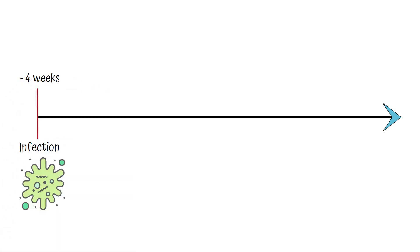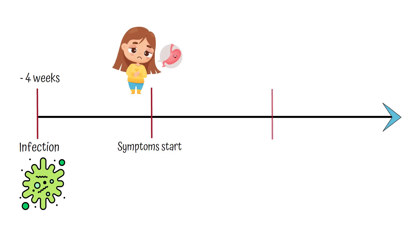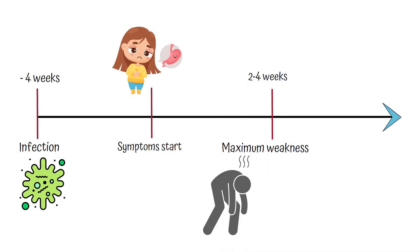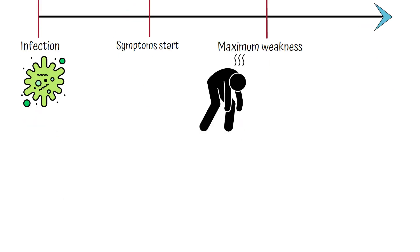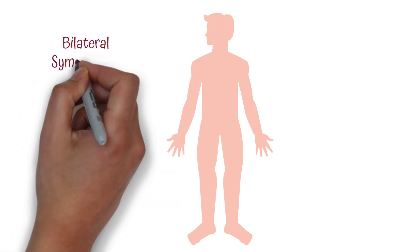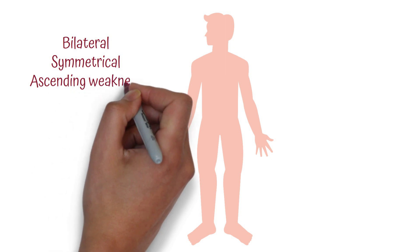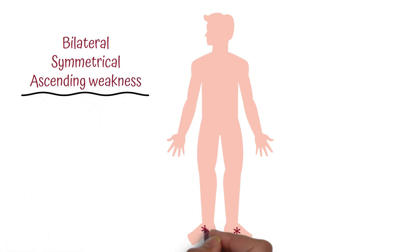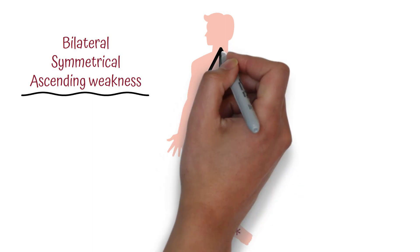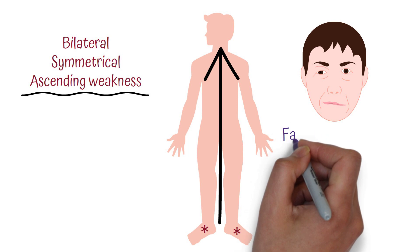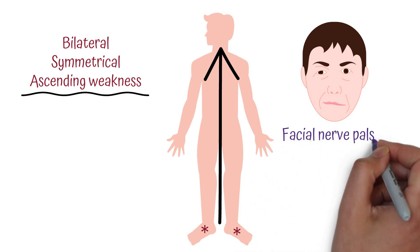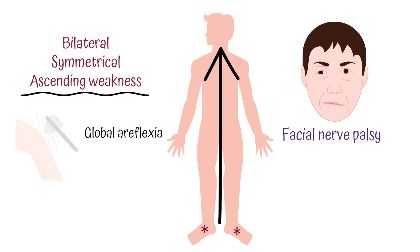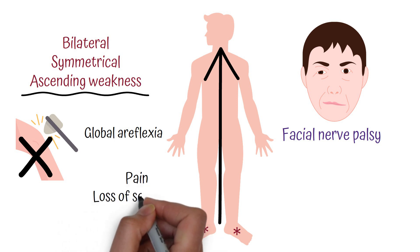Patients with Guillain-Barré syndrome start having symptoms within 4 weeks of a preceding infection such as gastroenteritis. They reach maximum weakness within 2–4 weeks, and the disease is unlikely to progress beyond 4 weeks. Patients present with bilateral symmetrical ascending weakness — starting at the feet and ascending upward to the upper limbs and cranial nerves, including facial nerve weakness. They will also have reduced reflexes, known as global areflexia, as well as neuropathic pain and peripheral loss of sensation.